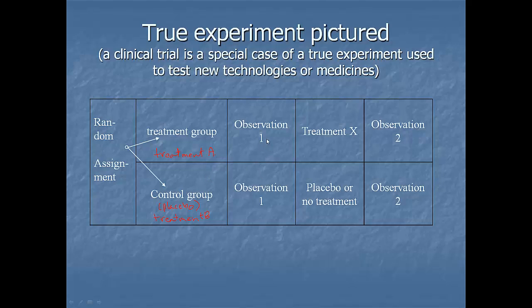So first observation. So this is 1A, 1B. If you want to talk about treatment A, treatment B. You get the treatment. And then observation 2A or 2B.